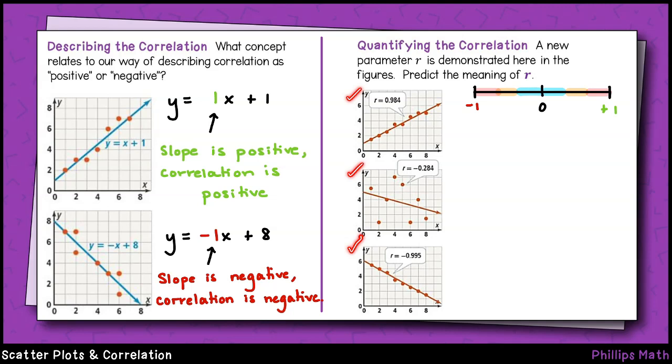Let's use these three on the right as an example. The top plot shows an r value of positive 0.984. That's a very strong positive correlation. We can see that all of the data is almost perfectly predicted by the trend line. The middle plot gives an r value of negative 0.284. That's a very weak negative correlation. We can see that the trend line is a very poor predictor of the data because most of the points have deviated far away from the line itself. Finally, at the bottom we have negative 0.995. That's almost a perfect negative correlation and this is the strongest match among these examples. Notice that the data again almost perfectly fits the line.